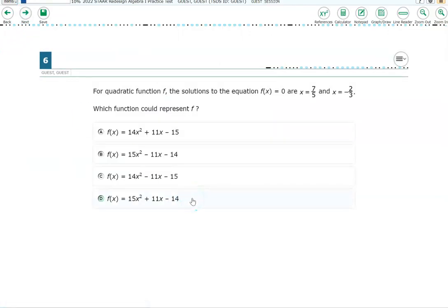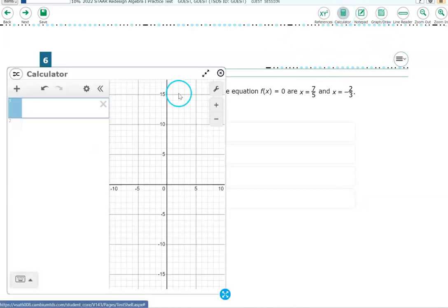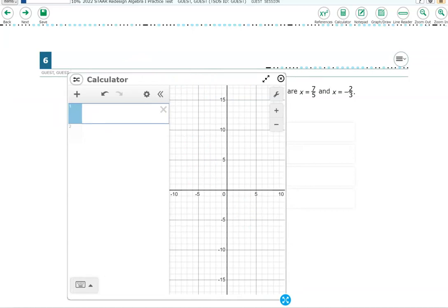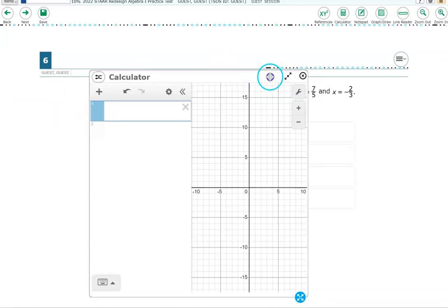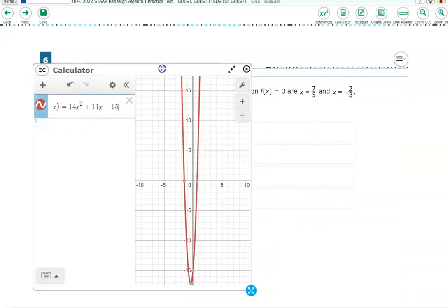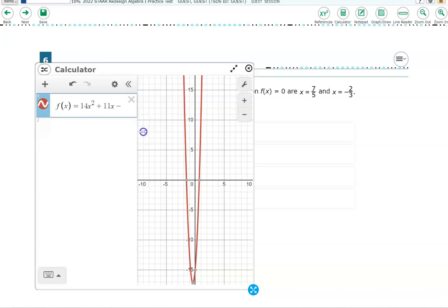For this quadratic function, the solutions are x is 7 fifths and x is negative 2 thirds. This one's fantastic on Desmos. Really like these types of items. Click on the calculator button, and let's put in the first answer choice first. I'm having a really tough time moving this around. I don't know why. All right. Let's type in f of x equals, and I'm just typing in answer choice A right now, 14x raised. So do shift 6 and put a 2 for your second power, and then hit the right arrow. Type plus 11x minus 15, and you should see this parabola.